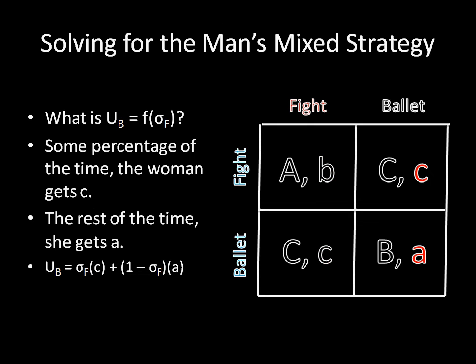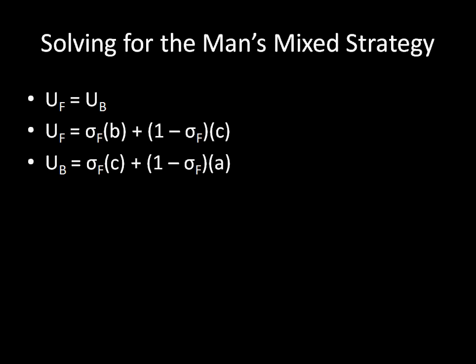And now we do the same thing for the woman always going to the ballet. Some percentage of the time, she gets c, and the rest of the time, she gets a.